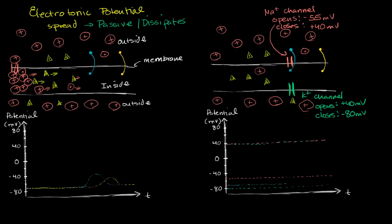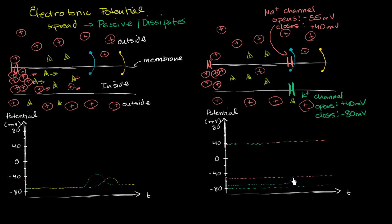Now what is going to happen? Just like we saw before, positive charge floods in at the left side of this neuron. And then, because of electrotonic spread, a little bit later, the potential across the membrane at this point is going to start to become less negative. But it's not just going to be a little bump and then go back down — because right when the potential hits negative 55 millivolts, it's going to trigger the opening of this sodium channel.